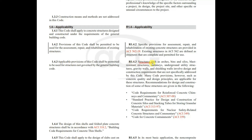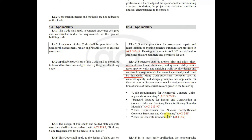Section 1.4.3 states that applicable provisions of this code shall be permitted to be used for structures not governed by the general building code. Structures such as arches, bins and silos, blast-resistant structures, chimneys, underground utility structures, gravity walls, and shielding walls involve design and construction requirements not specifically addressed by this code. Separate codes exist for these: ACI 307-08 for reinforced concrete chimneys, ACI 313-97 for concrete silos, ACI 349 for nuclear safety-related concrete structures, and ACI 359 for concrete containments.